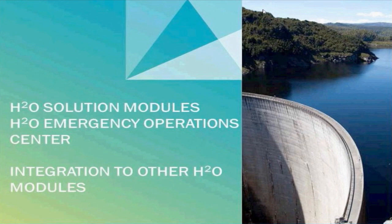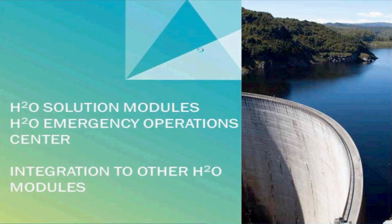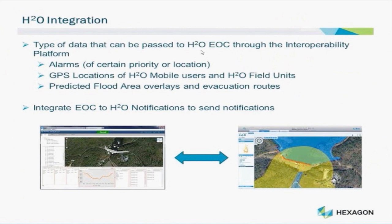The H2O Emergency Operations Center is just one of the H2O solution modules, and it can interface with other H2O modules to provide even more relevant information to users in real time. For example, the H2O Dashboard can be integrated so that key alarms such as priority one alarms, GPS locations, and flood inundation areas are all available in near real-time to users of the H2O Emergency Operations Center. By integrating the H2O Notifications module, users can send voice or SMS calls directly from within the application. The key is that everybody, no matter which system or solution they are using, is sharing the same information.